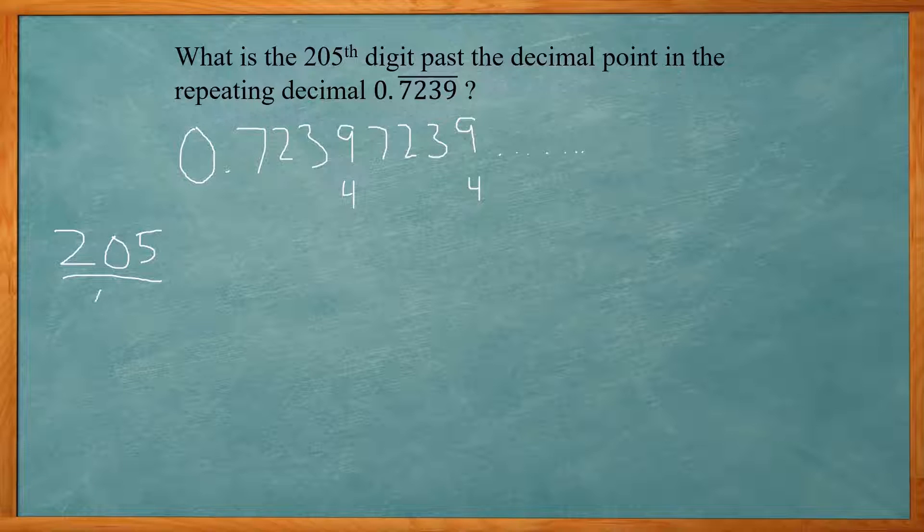So when I do that I get 51.25. Look at the 0.25. I'm dividing by four, so my remainder is 1. 1 out of 4 to get the 0.25.